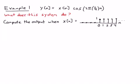Okay, so example one. The first system that we'll consider is y[n] = x[n] times cosine of 2π over 4n. So this system takes the input sequence and multiplies it by cosine 2π over 4n.